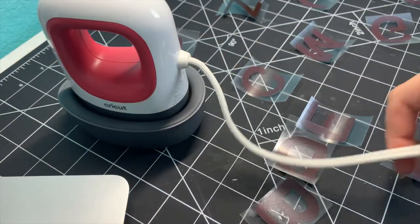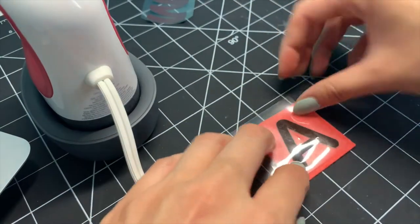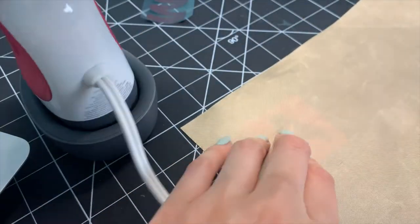Using my mini heat press I ironed on all the letters onto the squares making sure they were centered.